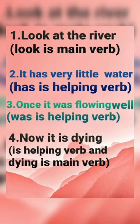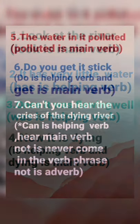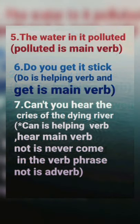Next: 'Once it was flowing warm.' What is the helping verb? 'Was' is the helping verb. 'Flowing' is the main verb. 'Was flowing' is the verb phrase. Fourth one: 'Now it is dying.' 'Is' is the helping verb. 'Dying' is the main verb. 'Is dying' is the verb phrase.